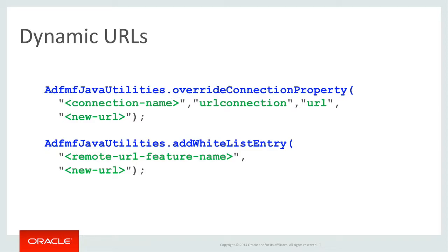The solution in code is to make two separate calls to the ADF MF Java Utilities class. Firstly, it has a static method, overrideConnectionProperty, which given the connection name and a new URL will remap the connection in the connections.xml file associated with the remote URL at runtime. It is also necessary to add the URL to the whitelist dynamically via a call to the ADF MF Java Utilities addWhitelistEntry, supplying the remote URL feature name and the new URL, as in this case the URL is not automatically added to the whitelist unlike specifying the connection URL at design time.